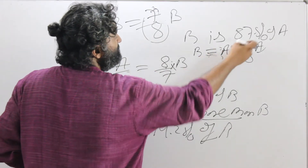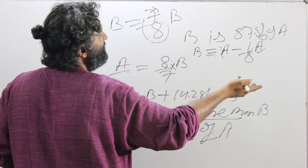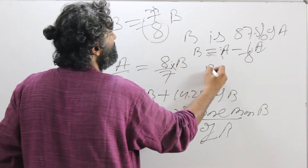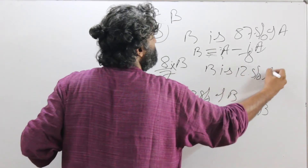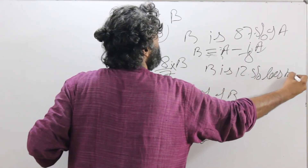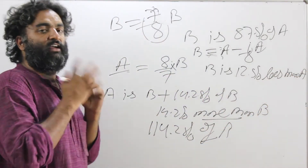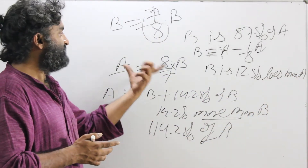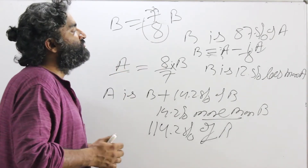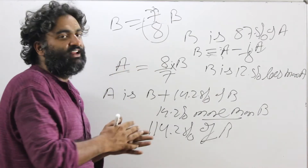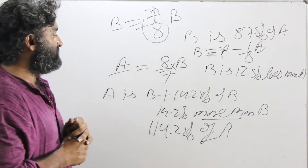B is 1 by 8 of A less than A, and 1 by 8 is 12.5%. So the same information I could write as: B is 12.5% less than A. If you are getting confused with this, it makes sense because there are only two numbers, and which number is considered to be 100 is totally up to you when dealing with pure numbers, not story forms.